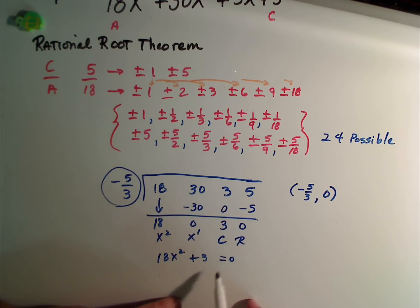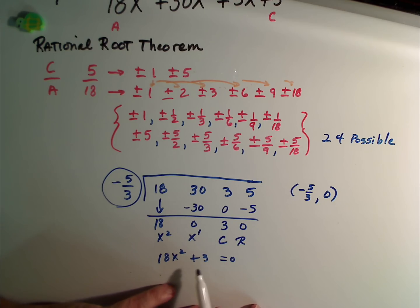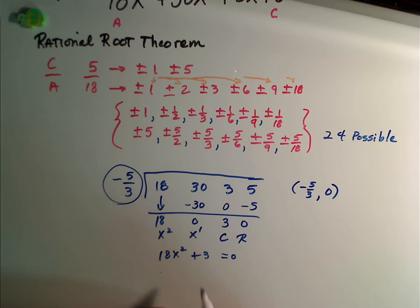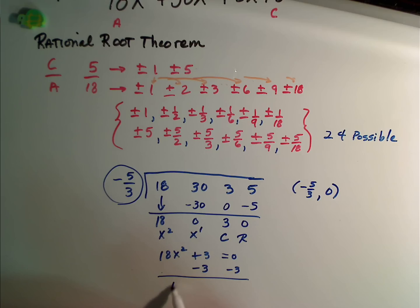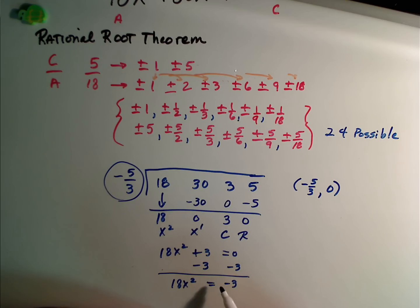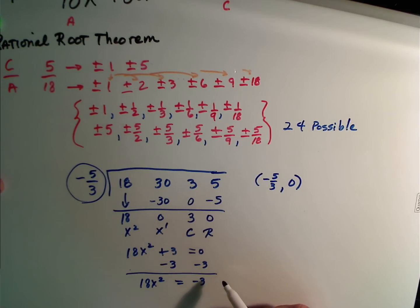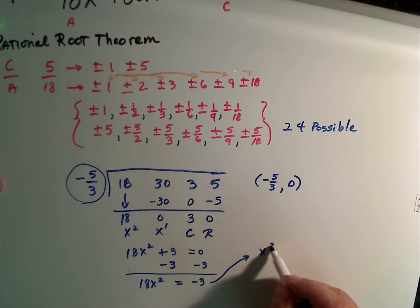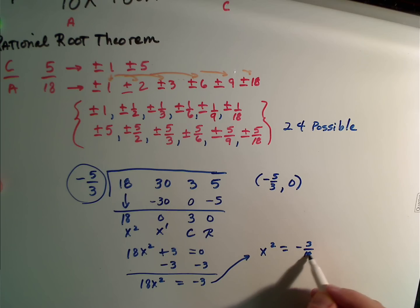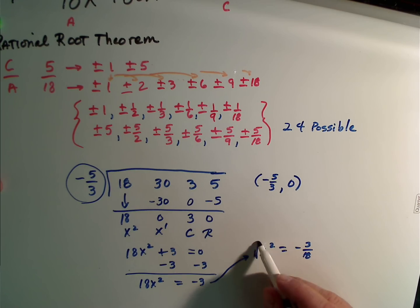Now, we can use the quadratic equation. We can use anything we want. But I notice that I don't have a middle term. And if we recall some of the tools of our trade here, I can simply, since I'm setting this to 0, remember, because that's where our roots are, is when y is 0. Well, what this ends up being is 18x^2 equals negative 3. Well, if we divide both sides by 18, what I'll end up with is x^2 equals negative 3 over 18. Taking the square root of both sides,